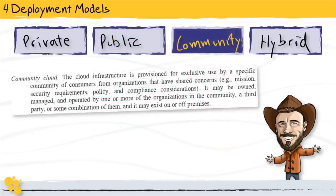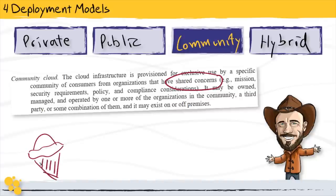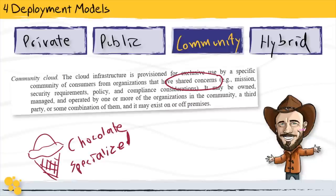The next deployment model is community cloud. The key to identifying this model is to look for patterns of a limited and shared concern. Imagine opening an ice cream shop — ice cream comes in all sorts of flavors, but rather than selling all of them, you sell only chocolate flavors. This is an example of specialization. In this way, you are providing a unique need to a smaller group of individuals — that is where the concept of community comes from.